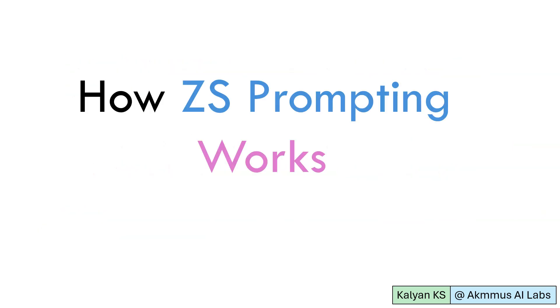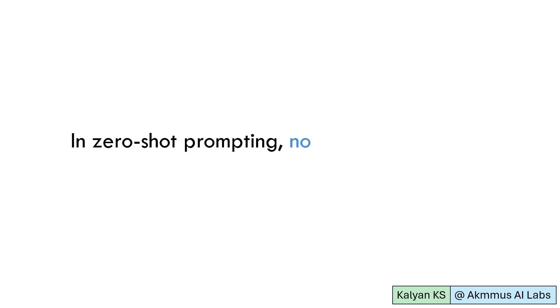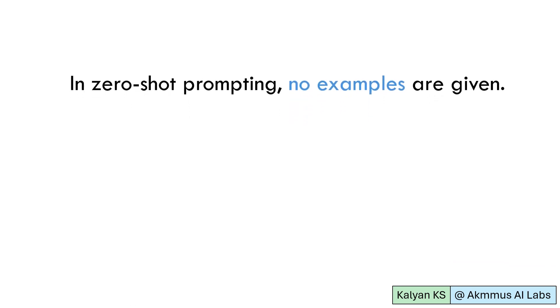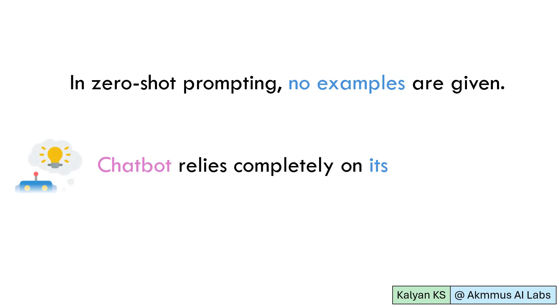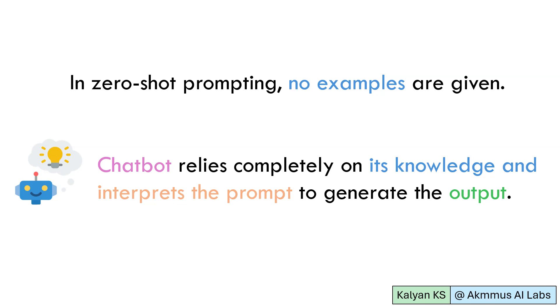Let us see how zero-shot prompting works. In zero-shot prompting, no examples are given. So, the chatbot relies completely on its knowledge and interprets the prompt to generate the output.